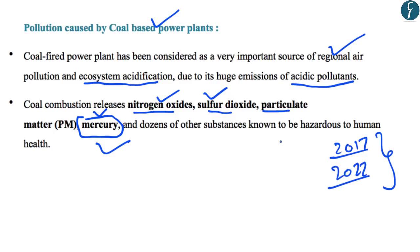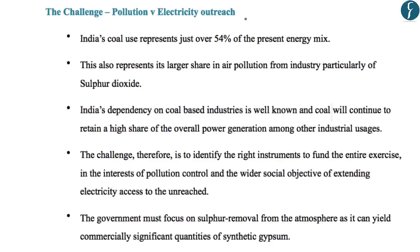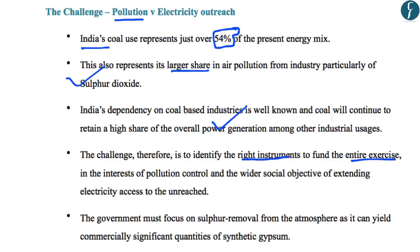The editorial highlights that the government should follow viable financial plans to reduce pollution from coal-based power plants. India is dependent on coal-based industries and coal will continue to retain a high share in overall power generation. India has a large share in sulfur dioxide pollution from coal-based power plants. The challenge for the government is to identify the right instruments to fund the exercise of controlling pollution from these plants. The government must also focus on sulfur removal from the atmosphere, as it can yield commercially viable quantities of synthetic gypsum.